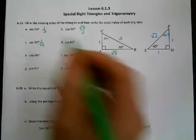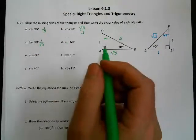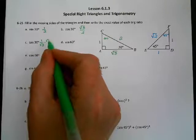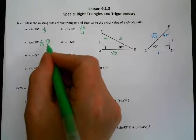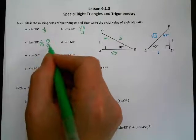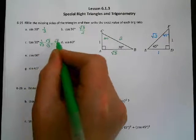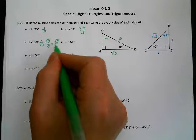Remember, you're not allowed to have a radical in the denominator. So we multiply the top and the bottom by root 3, and we get root 3 over 3.